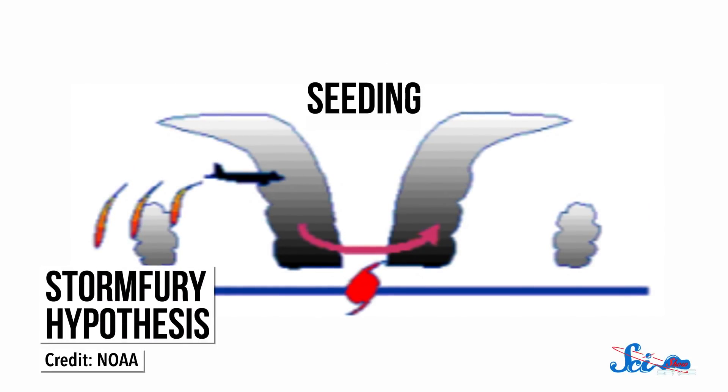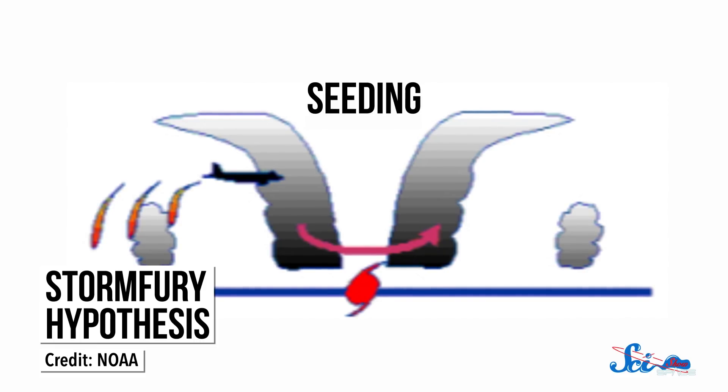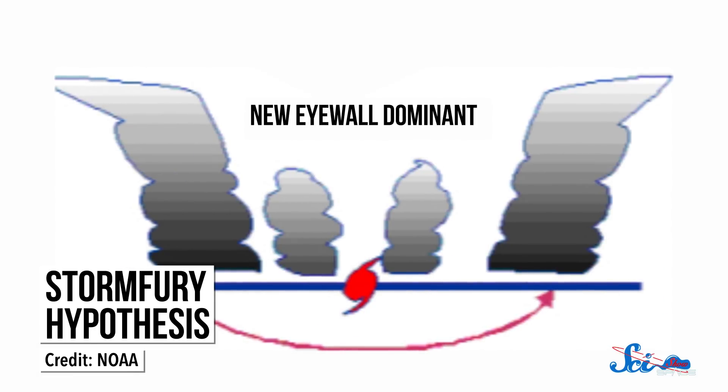Supposedly, this would widen the eye of the storm. The idea was that water would condense outside of the existing eye, which would draw moisture away from it and form a new, wider eye wall. And that would slow the hurricane's rotation rate and wind speeds, and ultimately kill the storm.